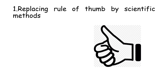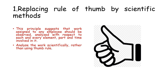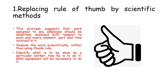The first important principle is replacing rule of thumb by scientific methods. This principle suggests that work assigned to any employee should be first observed and analyzed with respect to each and every element, part, and time involved. It means analyzing the work scientifically rather than using the old rule of thumb method — identifying what is to be done, how it is to be done, and what equipment will be necessary. Decisions should be based on facts and not on intuition or judgment, so that no resources, time, or cost is wasted.